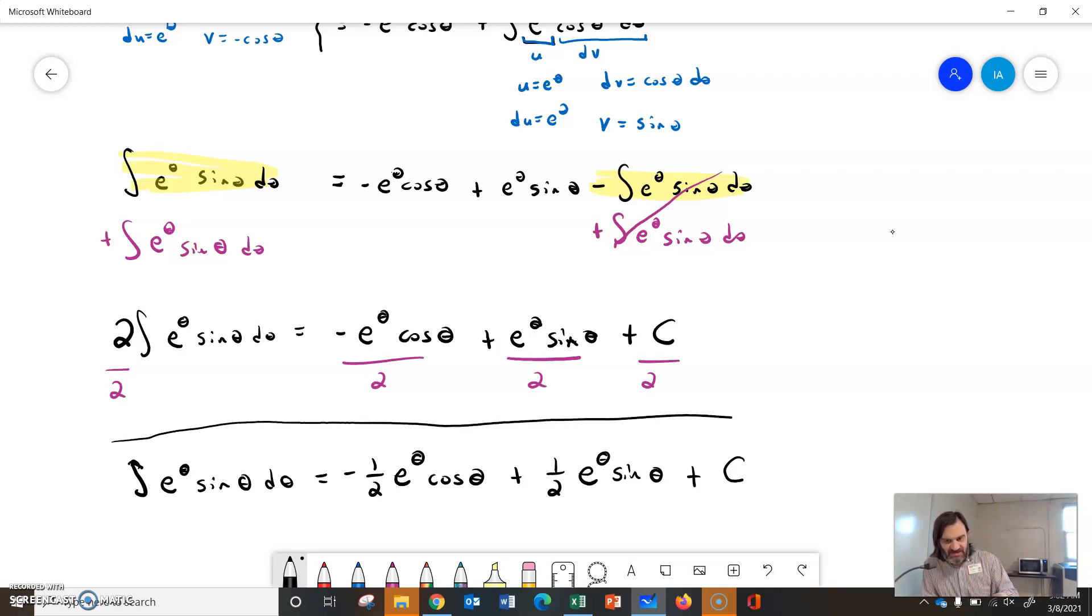So what we did was we found the original integral in our integration process. And this can generally happen if either one of the parts is not going to disappear, if the variable is not going to cancel out through taking a derivative over and over. So usually if you have some combination of these functions, whether it's two trig functions together or an exponential and a trig function, usually you're going to have something like this because no matter how many times you mess with u, you're not going to get rid of the variable in that term. Alright, thank you.